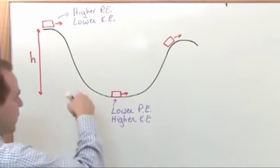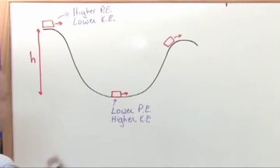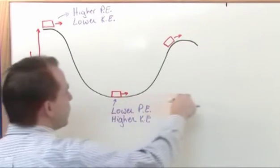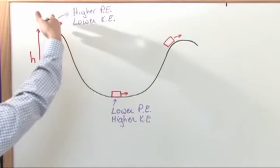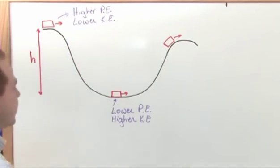And height above the ground is MGH, which is basically your potential energy. So you have a lower potential energy, because you're closer to the ground. Let's say the ground is right here under the coaster here. So you've converted that potential energy to kinetic form.